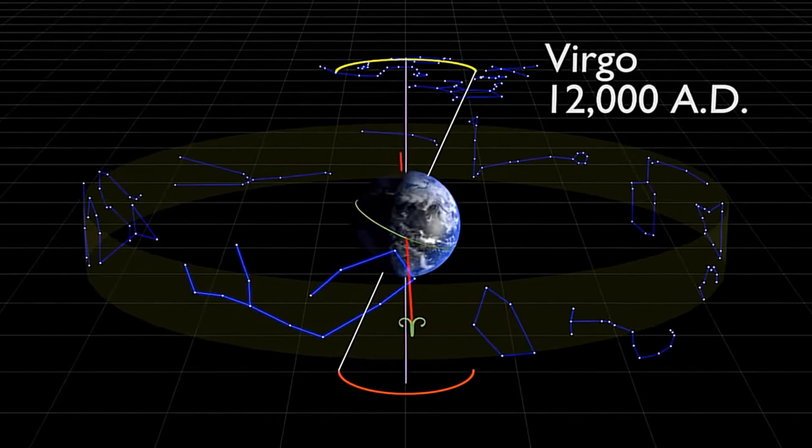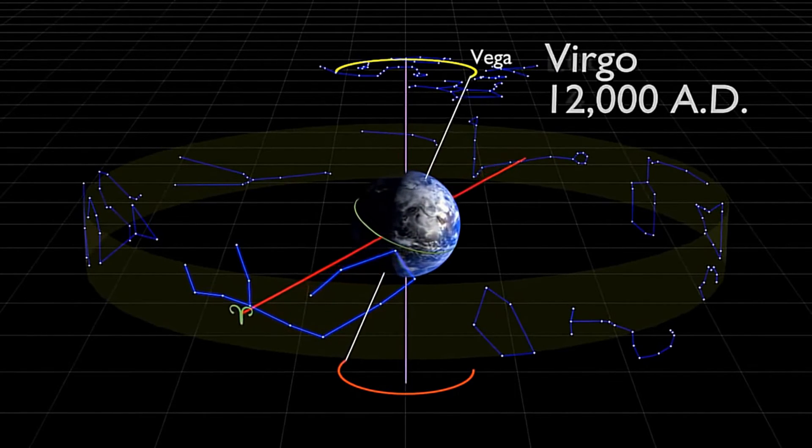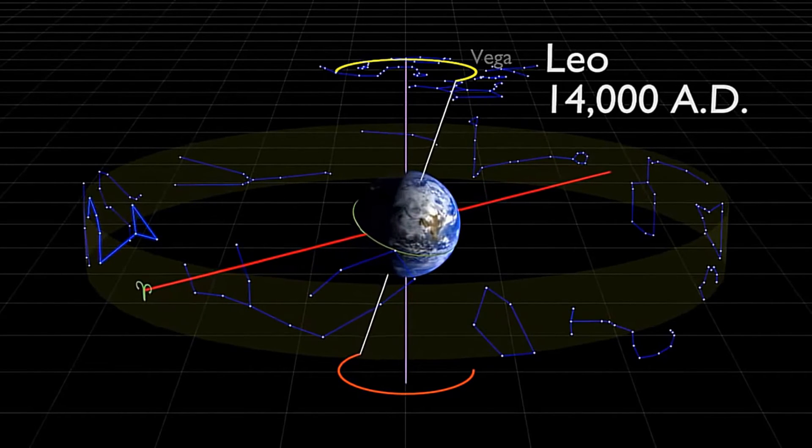Over the course of this wobble, the equinoxes will move forward through the constellations of the zodiac. We call this precession.